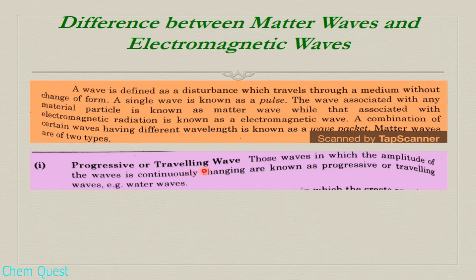The first type is progressive or traveling waves. Progressive or traveling waves are those waves in which the amplitude of the wave is continuously changing. Water waves, for example ocean waves, are matter waves and fall under this category.